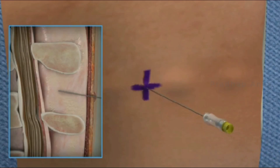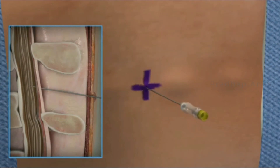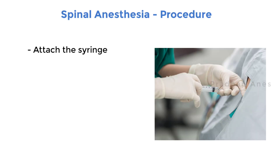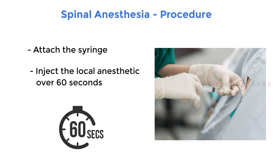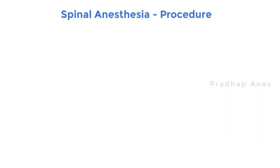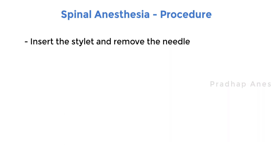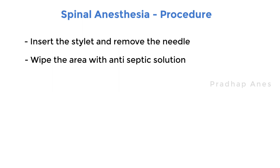Once all is set, start inserting the needle through the skin and subcutaneous tissue at a 90-degree angle to the skin surface. Advance the needle until cerebrospinal fluid is returned, and attach a syringe containing the local anesthetic. Once the site is confirmed, inject the local anesthetic slowly over 60 seconds. After administering the medication, remove the spinal needle gently and wipe the area with an antiseptic solution.